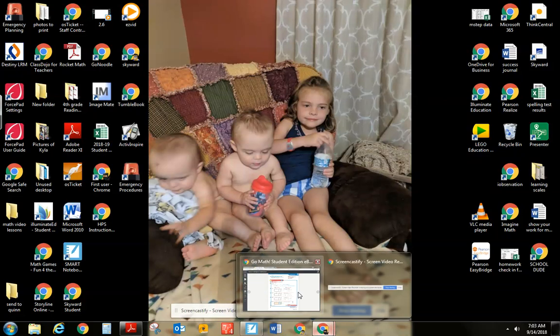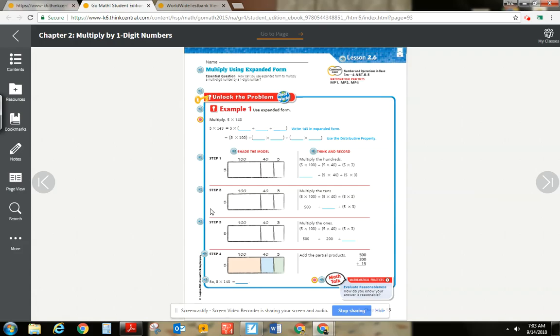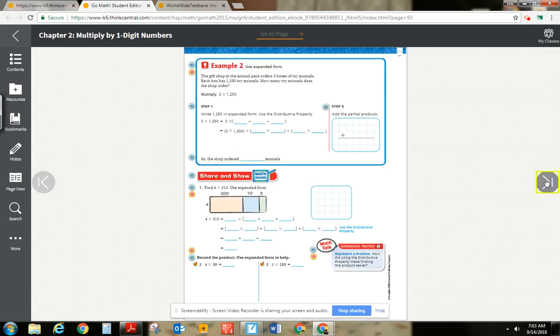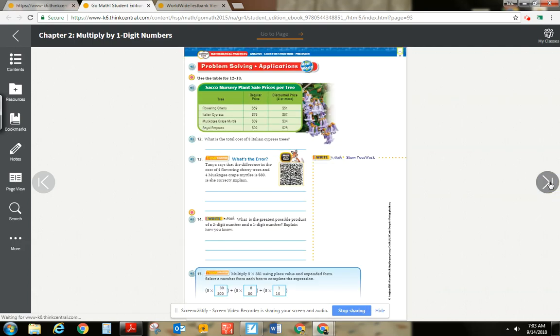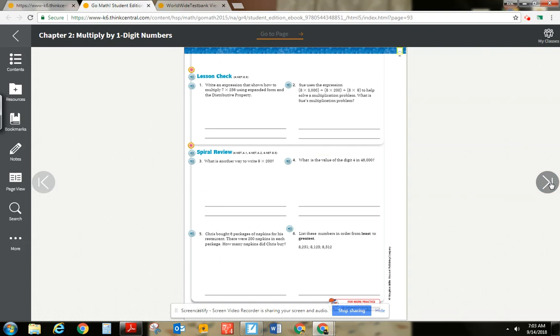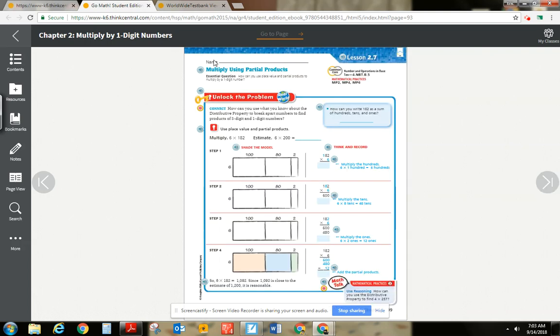Hey, Mr. Graywood here. So we are going to be going over GoMath 4th grade lesson 2.7. And 2.7 is really going to focus on multiplying using partial products.